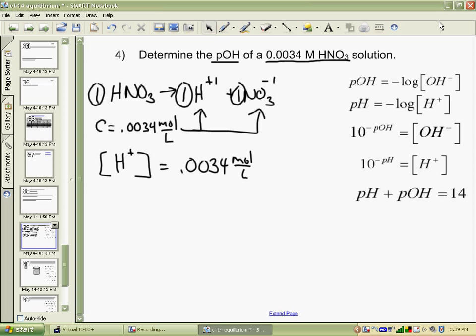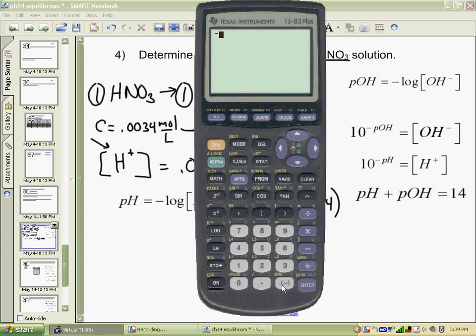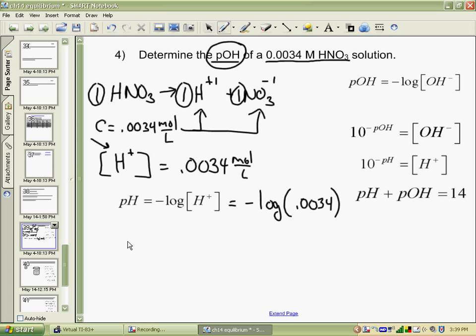Now, the question wants the pOH. Well, I can't directly get the pOH from a hydrogen ion concentration, not with the formulas I was giving anyway. But I know if I have the hydrogen ion concentration, I can determine the pH. So I'll do that first. We would have negative log of the hydrogen ion concentration, 0.0034. So you would have negative log 0.0034. That gives us 2.47. My pH is therefore 2.47.